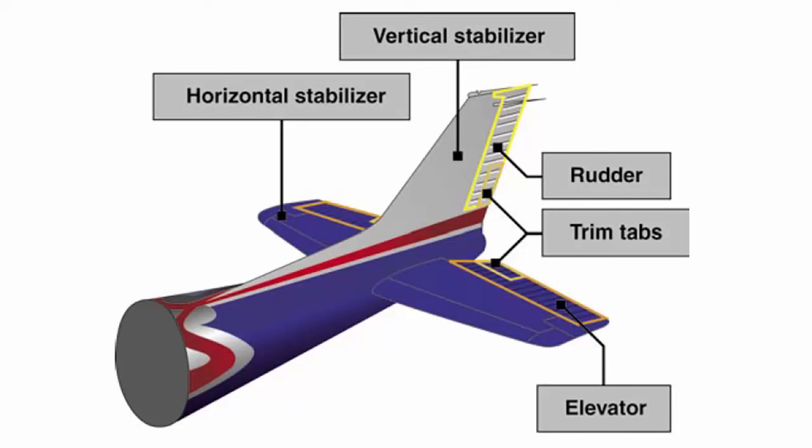The elevator, which is attached to the back of the horizontal stabilizer, is used to move the nose of the airplane up and down during flight. The trim tabs are small, movable portions of the trailing edge of the control surface. These movable trim tabs are controlled by the pilot to reduce control pressures during flight. Trim tabs may be installed on the ailerons, rudder, or elevator.